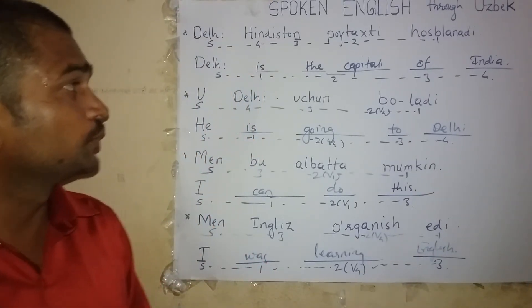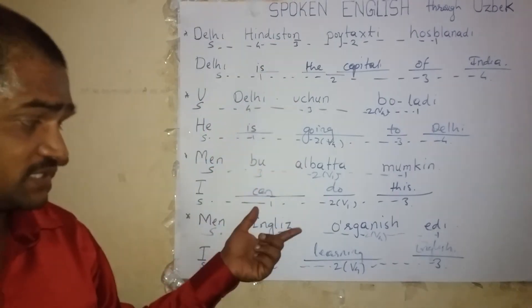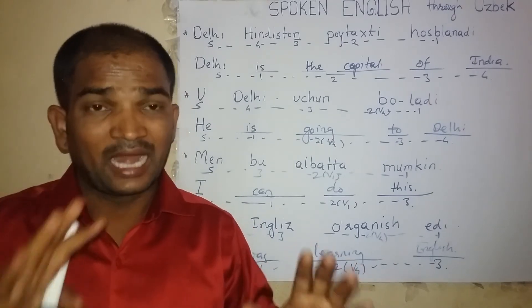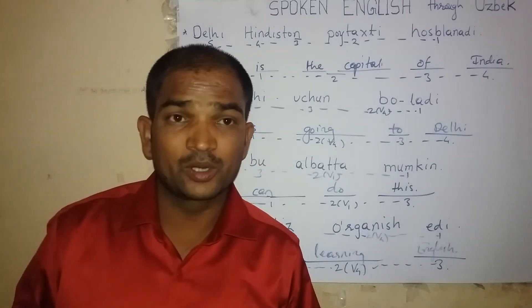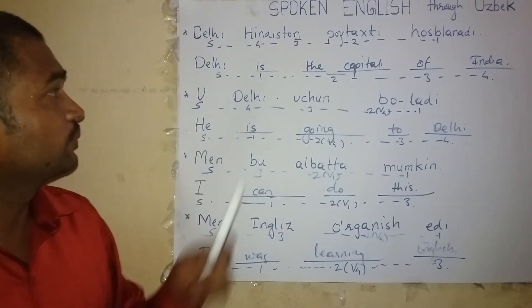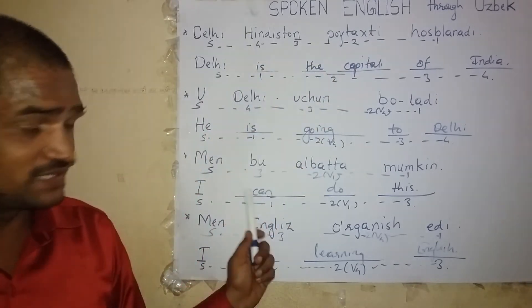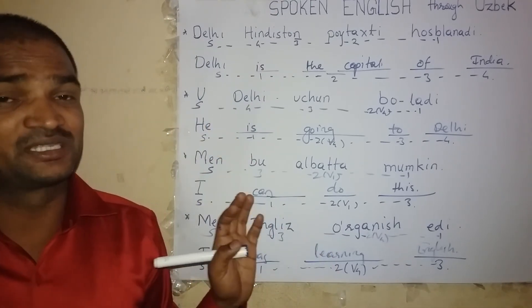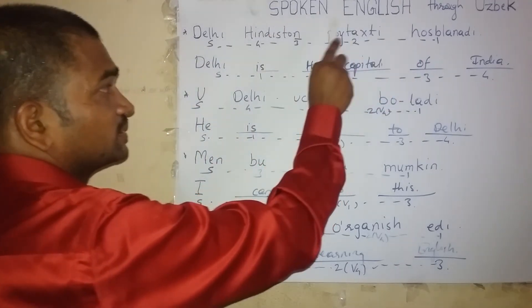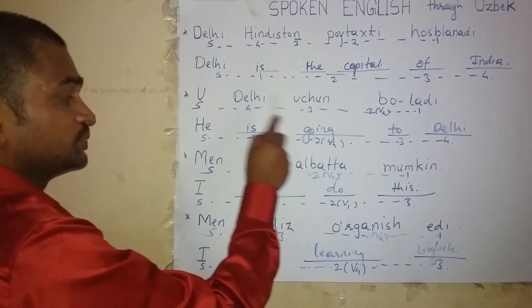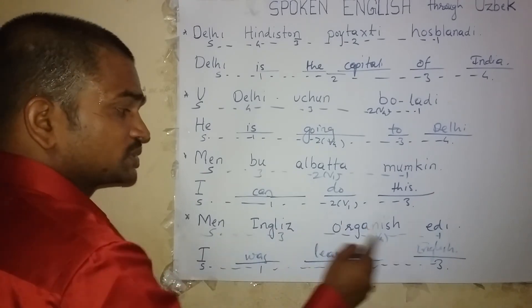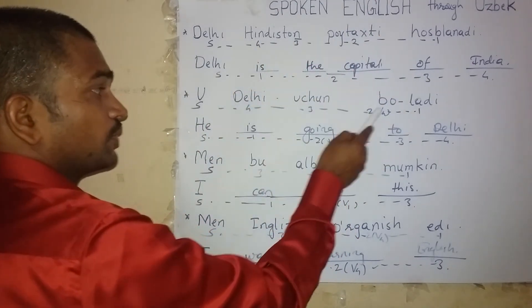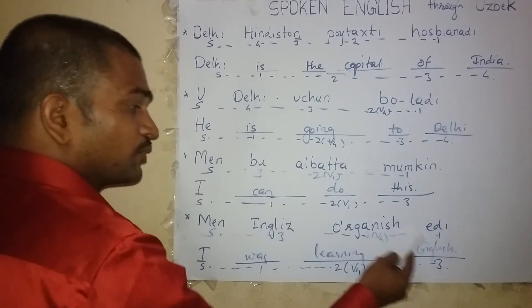Now, you should look at all these Uzbek sentences and try to speak them in English. Our eyes should be on the Uzbek sentences, but orally and with our fingers we should speak and type in English. Delhi is the capital of India. He is going to Delhi. I can do this. I was learning English.